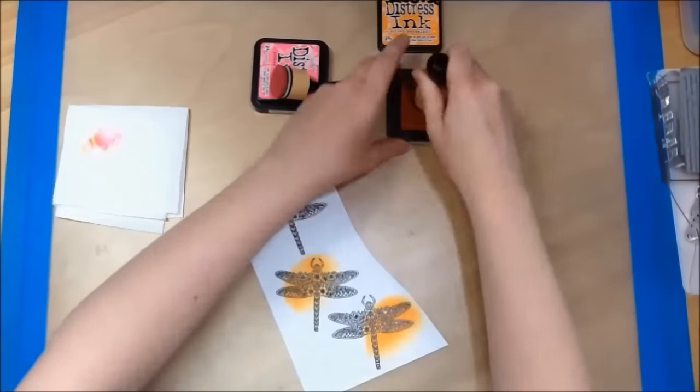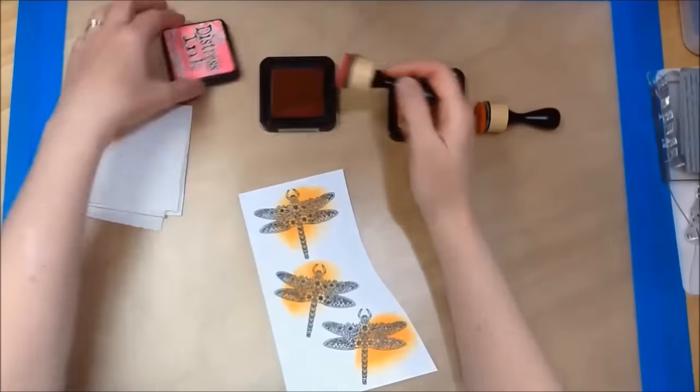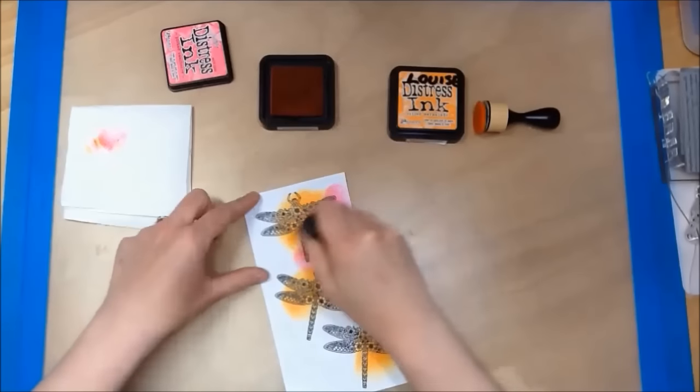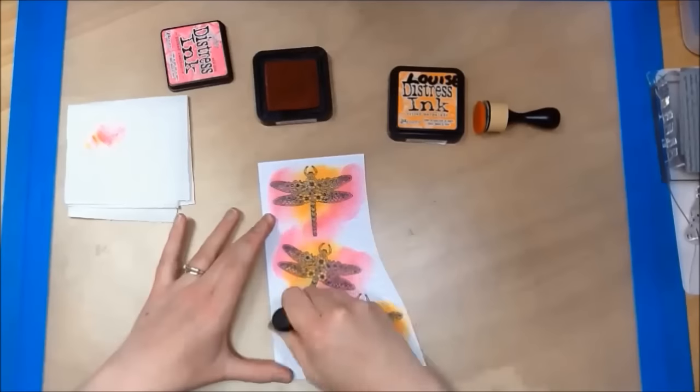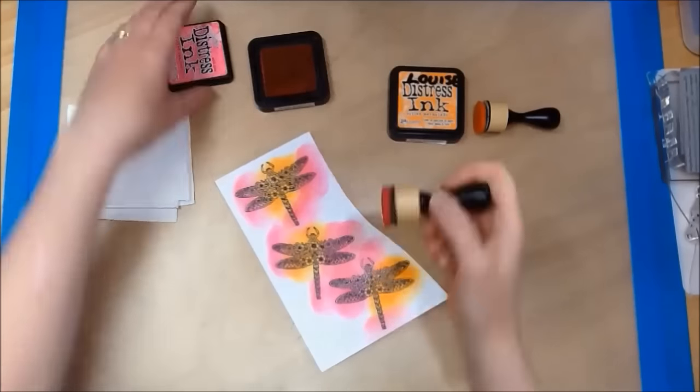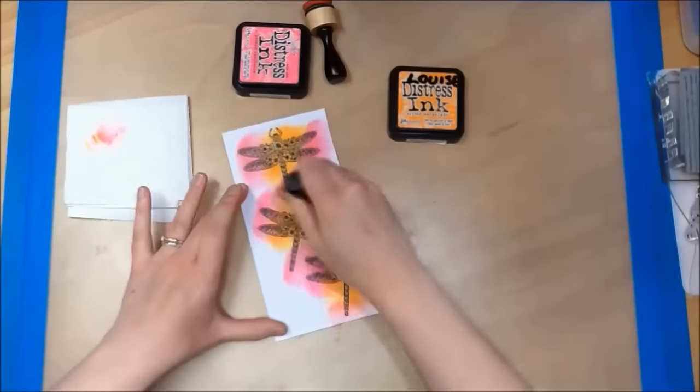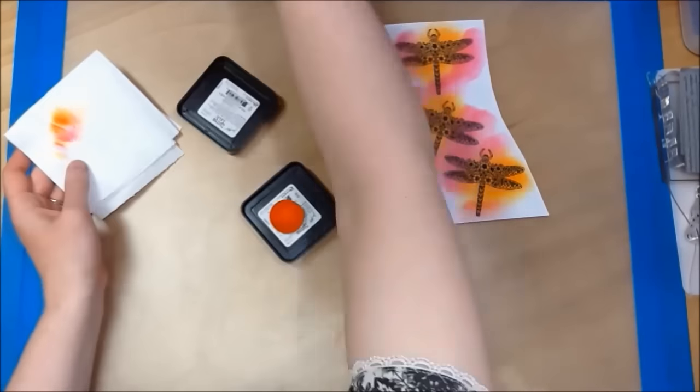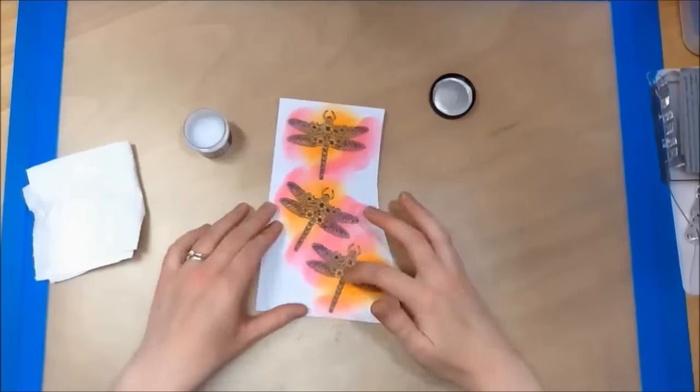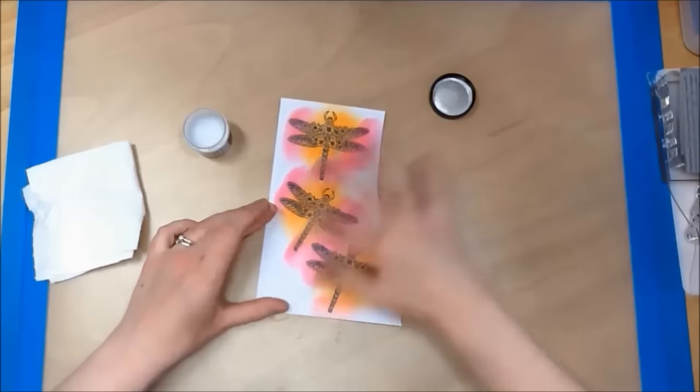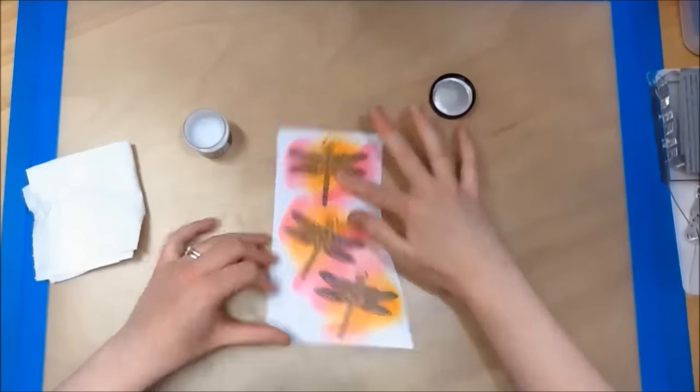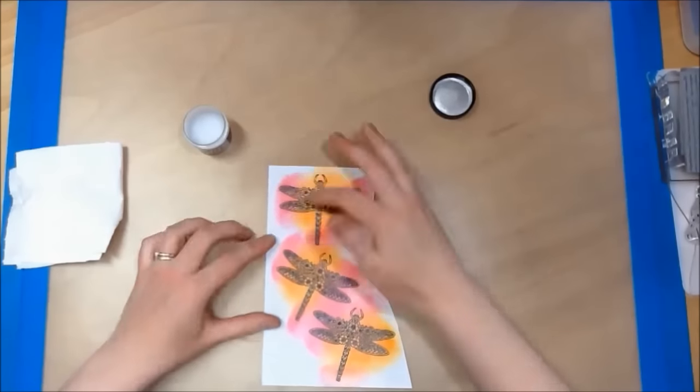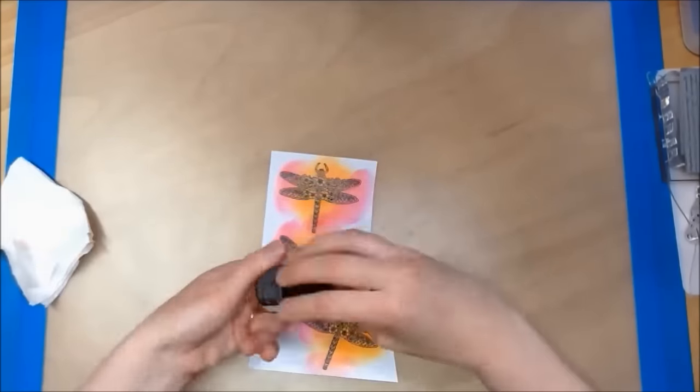So now I am using my Distress inks to give color to my dragonflies. Once the ink was dried I then used my Distress glaze over the top of my dragonflies to seal in the Distress ink.